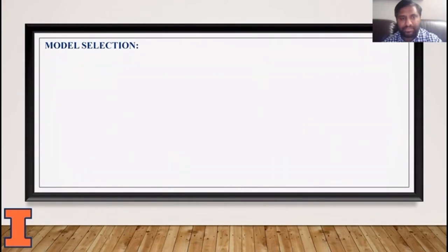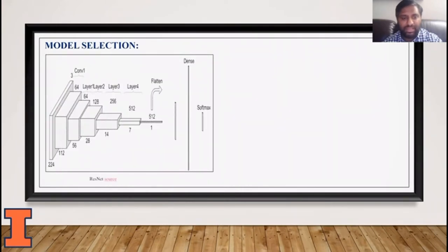ResNet or residual network. One of the problems of deep network is vanishing gradient problem. ResNet uses skip function wherein the output from the earlier layers is passed down to the later layer. This helps mitigate the vanishing gradient problem.